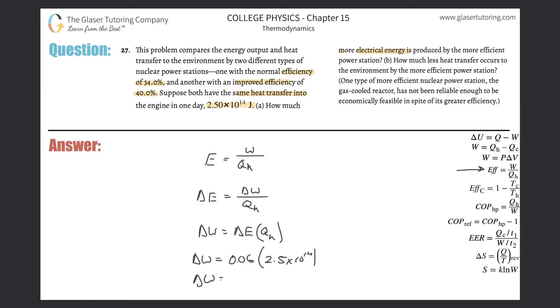And then change in work will simply be equal to this multiplication: 0.06 multiplied by 2.5 times 10 to the 14. And here we get a value of about 1.5 times 10 to the 13 joules.